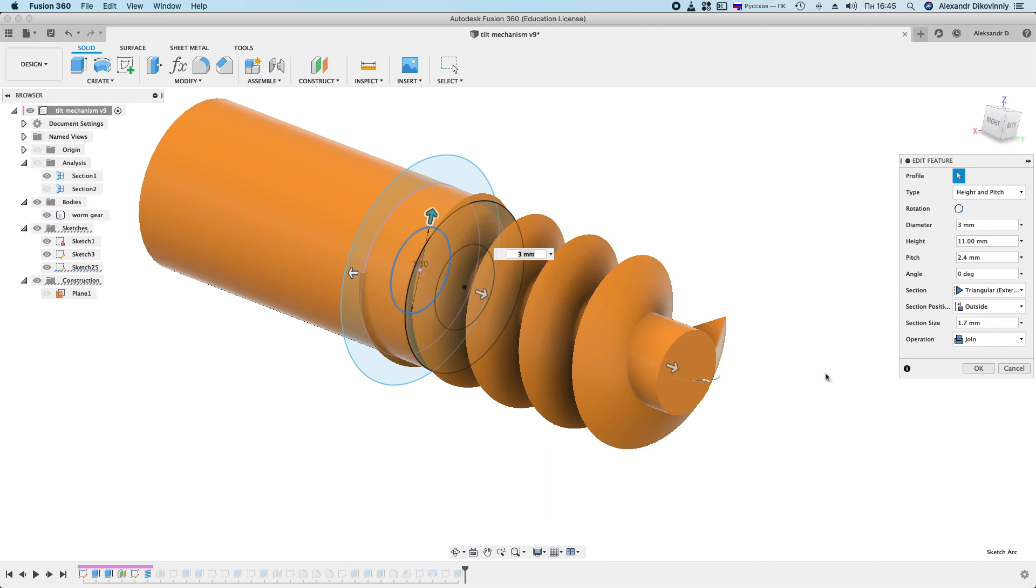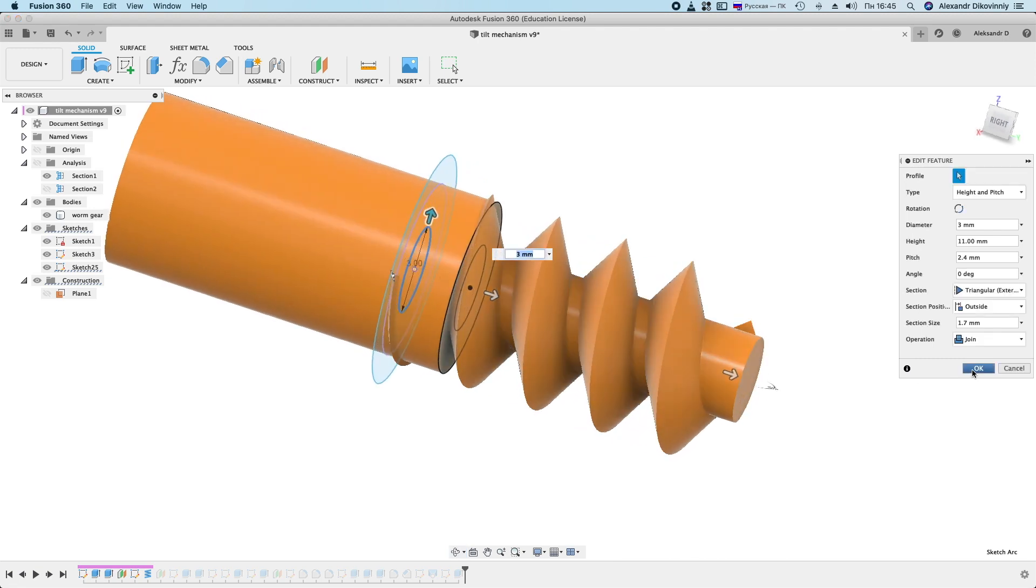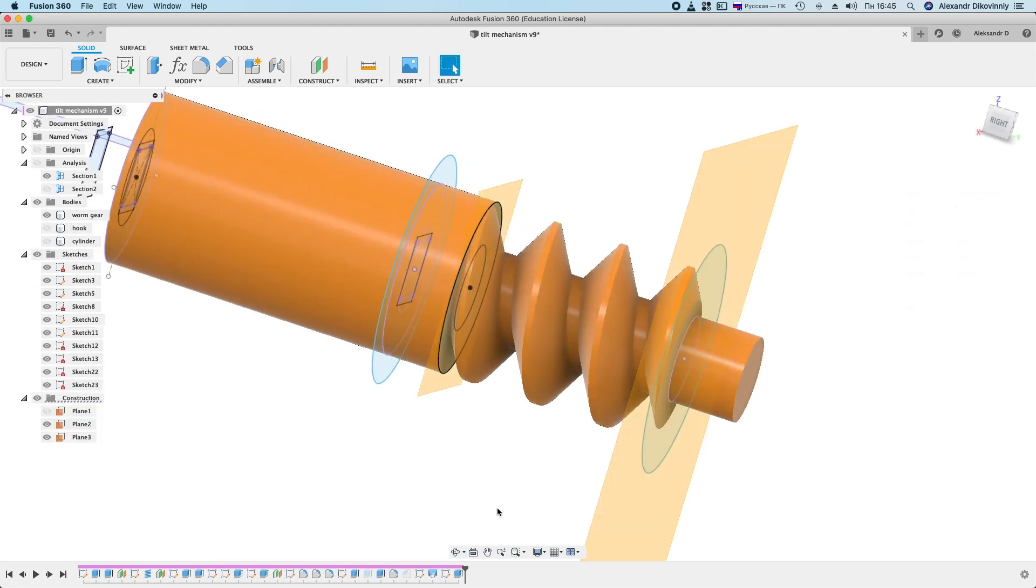I made the height a little more, so that the worm ended smoothly. I made the section size 1.7mm. Then 0.2mm will be cut off and will be good. It's done. If you need these 3D models, write to me about it in the comments.